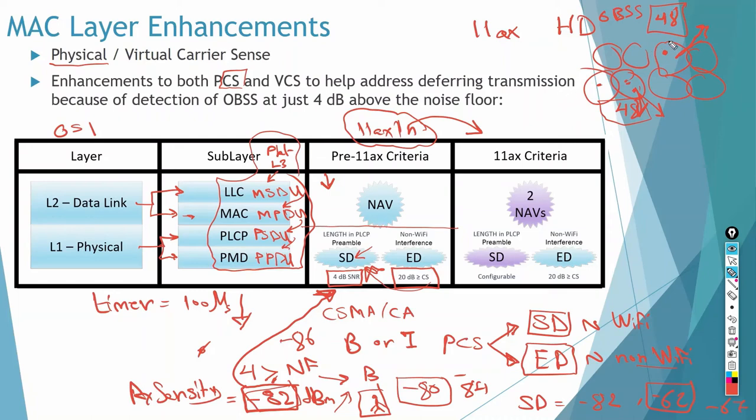By the way, we call this OBSS, overlapping basic service set. They are running on both channels, so a transmission within one BSS would defer the transmission in the other BSS, because they are using the same channel. Now, 11AX introduced a new feature. It's called BSS color. We will discuss this in the next slide, that helps actually enhance the transmission of the concurrent transmission of both stations that are considered OBSS. But before we get into this in the next slide, let's get back to the virtual carrier sense.